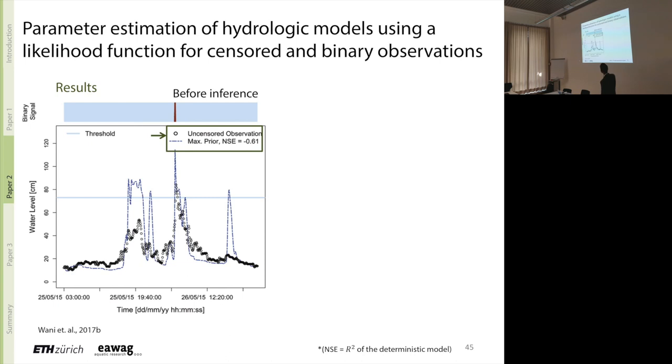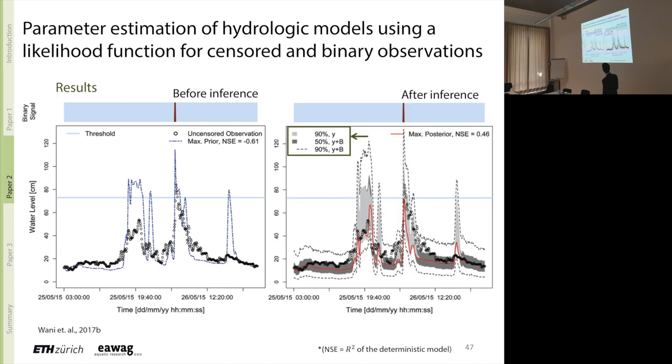These are observations which our inference procedure is blind to. These are the uncensored observations. This was our prior best understanding of the model parameters which overestimated the flow quite a bit and this is the threshold corresponding to the weir crest. And as soon as observations go above it, the water goes above the weir crest, we get a binary signal. So once we throw the binary data at the inference problem and learn about the model parameters, the posterior best guess is relatively better than the prior best guess and it falls closer to the uncensored observations. But all we threw at it was in the calibration phase some binary observations.